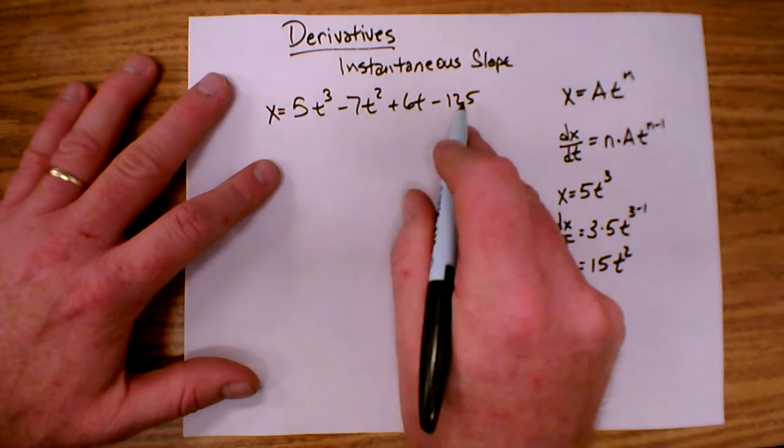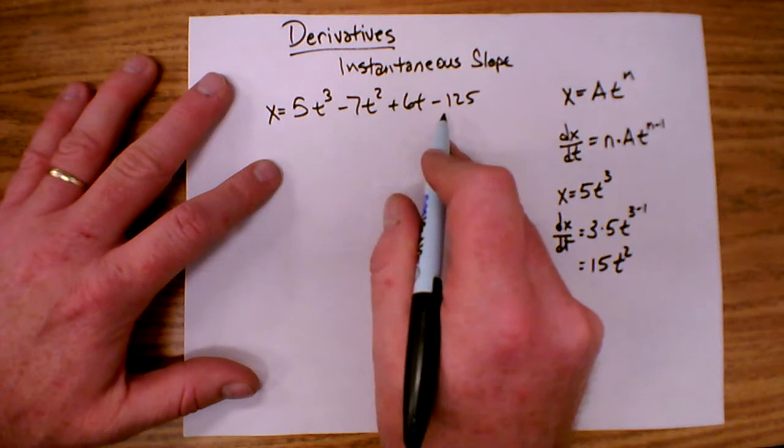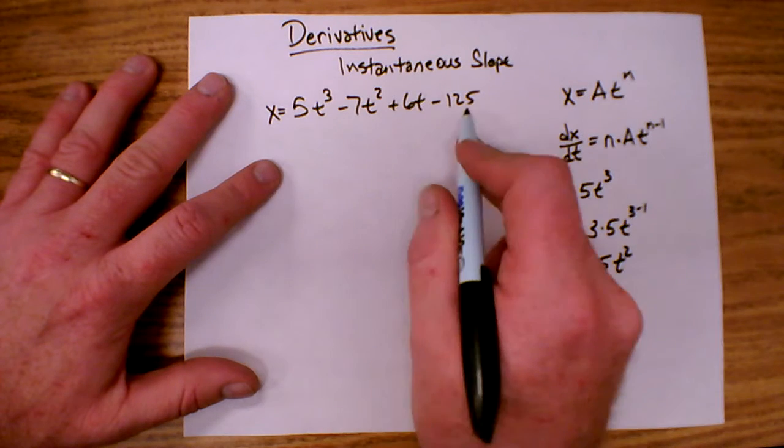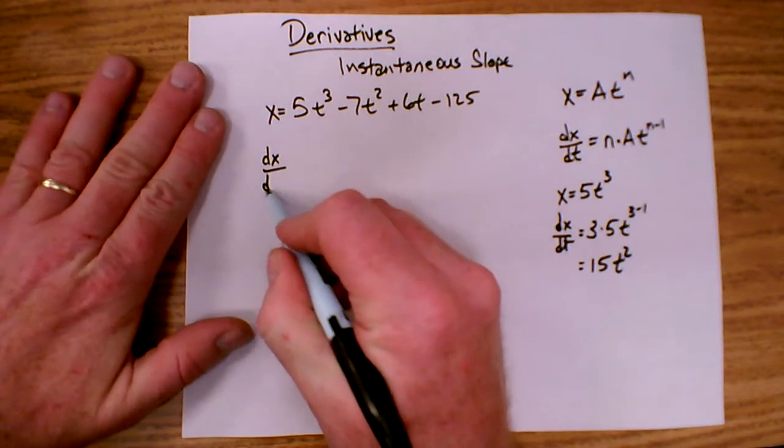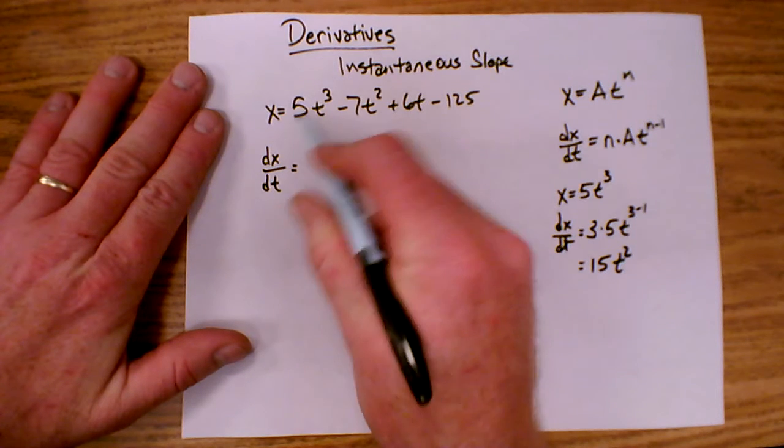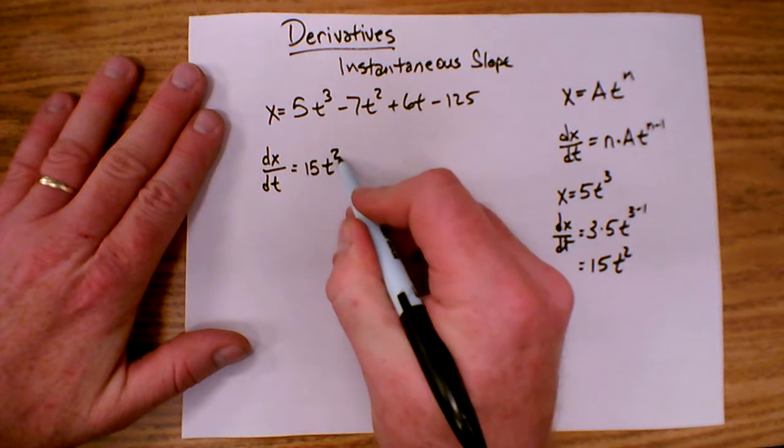So back to this problem. If I have a function, a polynomial function like this, I simply treat each monomial by itself and do the derivative. So dx dt would equal 3 times 5 t to the 3 minus 1